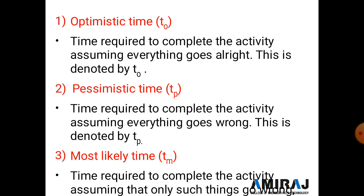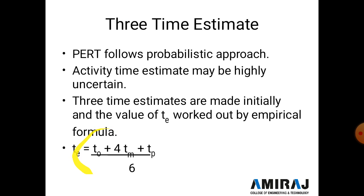All three values — to, tm, and tp — are written into the formula and you get the estimated time te. The formula is: te = (to + 4tm + tp) / 6. With this, we complete today's topic and in the next lecture we will discuss CPM examples.